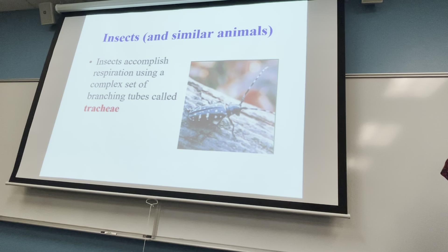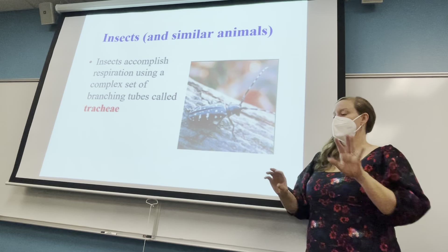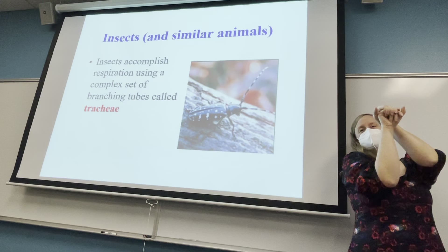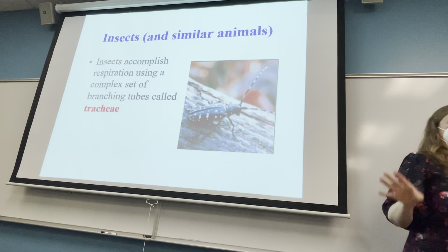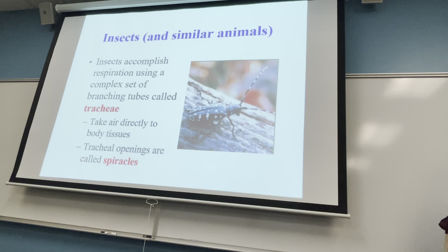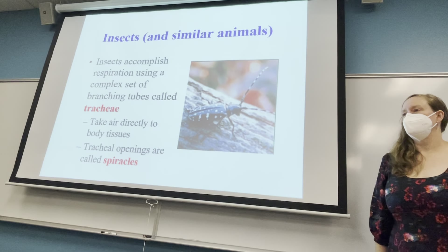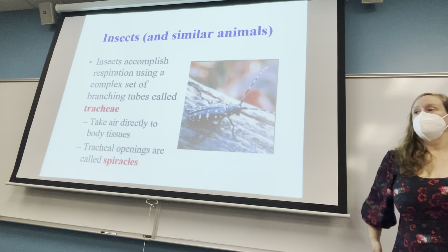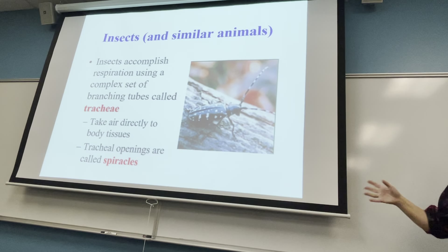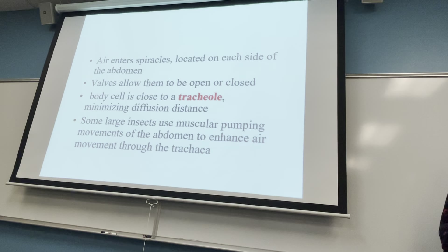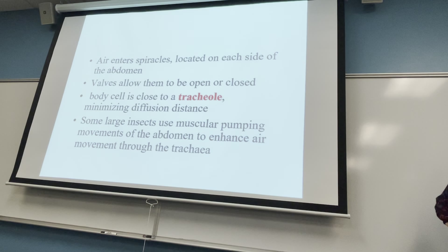Insects do not have a trachea at their mouth — their trachea are on the sides of their body, which is very different from us. As they crawl around in dirt or dangerous environments, they can close off their trachea using spiracles, which can open and close. The trachea branch to smaller and smaller branches throughout the body, so every cell is within diffusing distance of a tracheal branch and can get an adequate amount of oxygen.